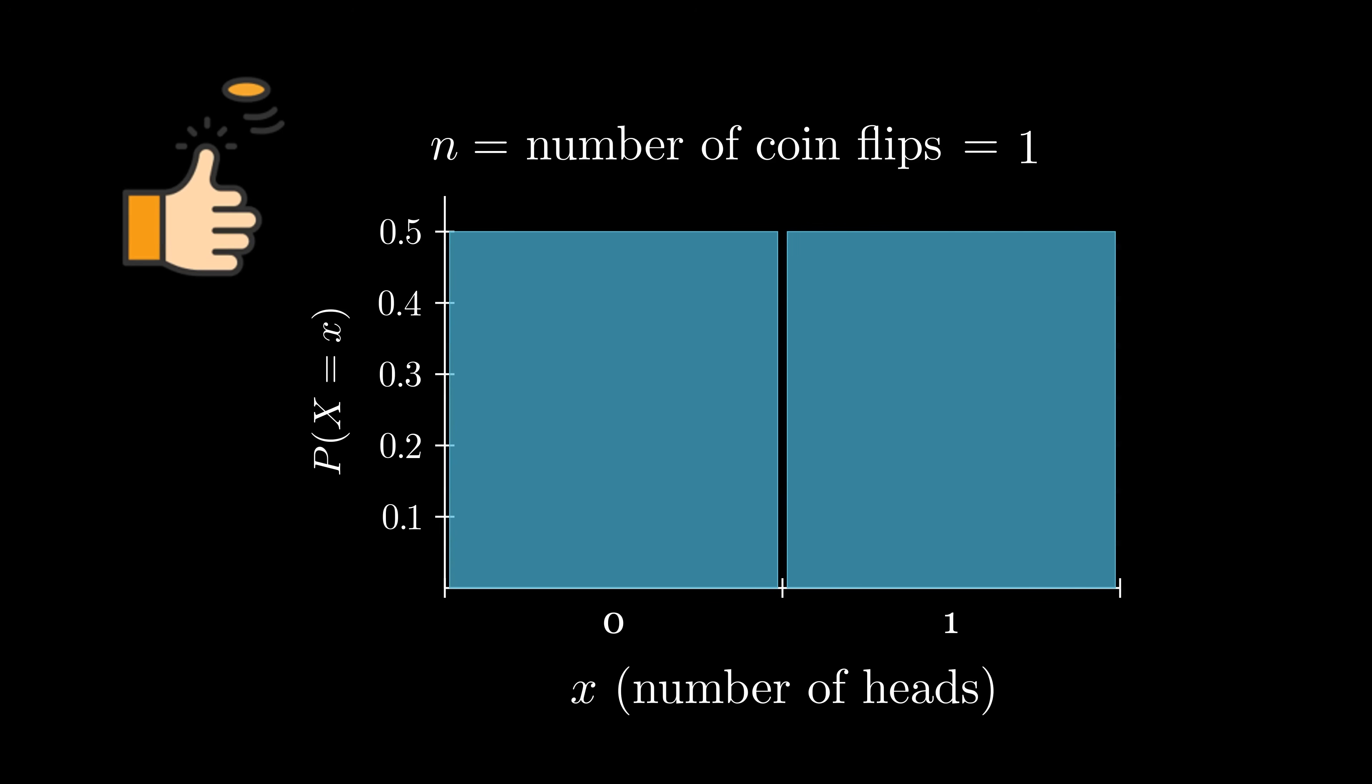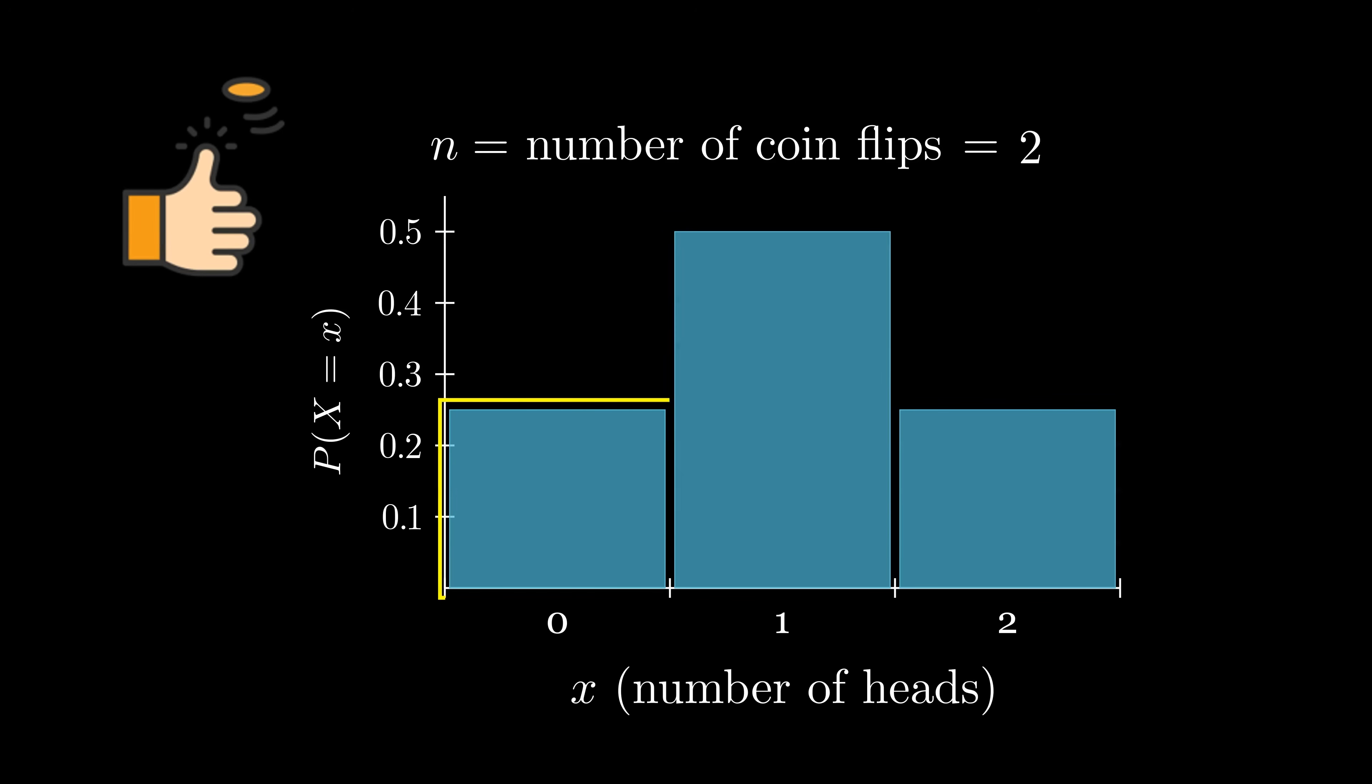But what if we flipped the coin twice in a row? If we do this and count the number of heads, then there is a 25% chance of getting two tails, or no heads, a 50% chance of getting one heads and one tails, and a 25% chance of getting two heads.